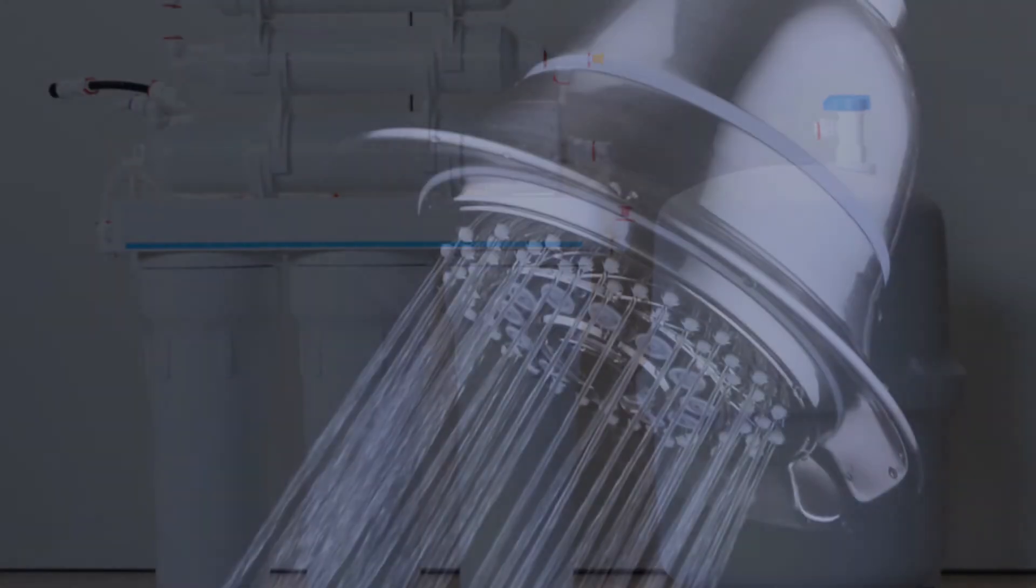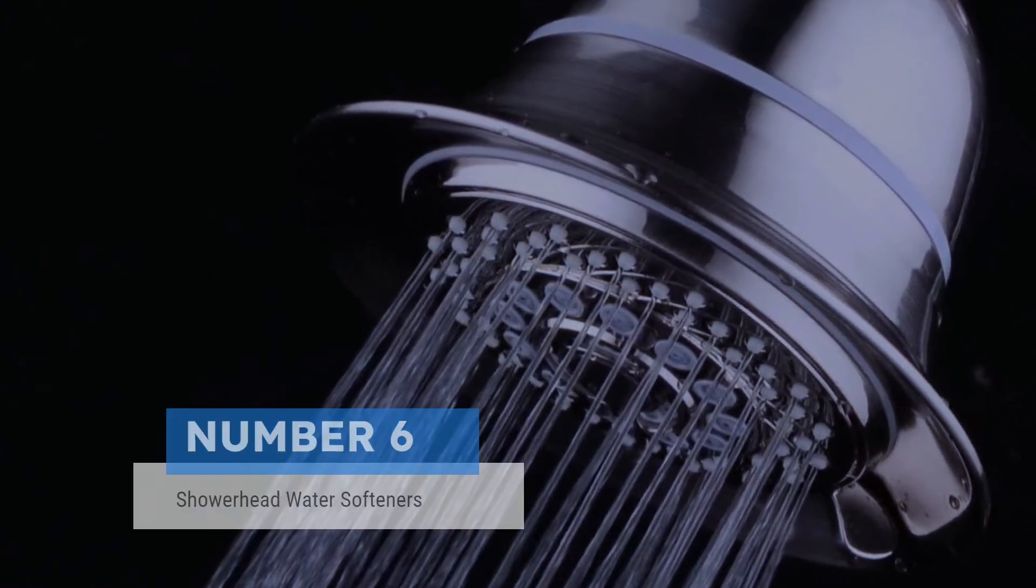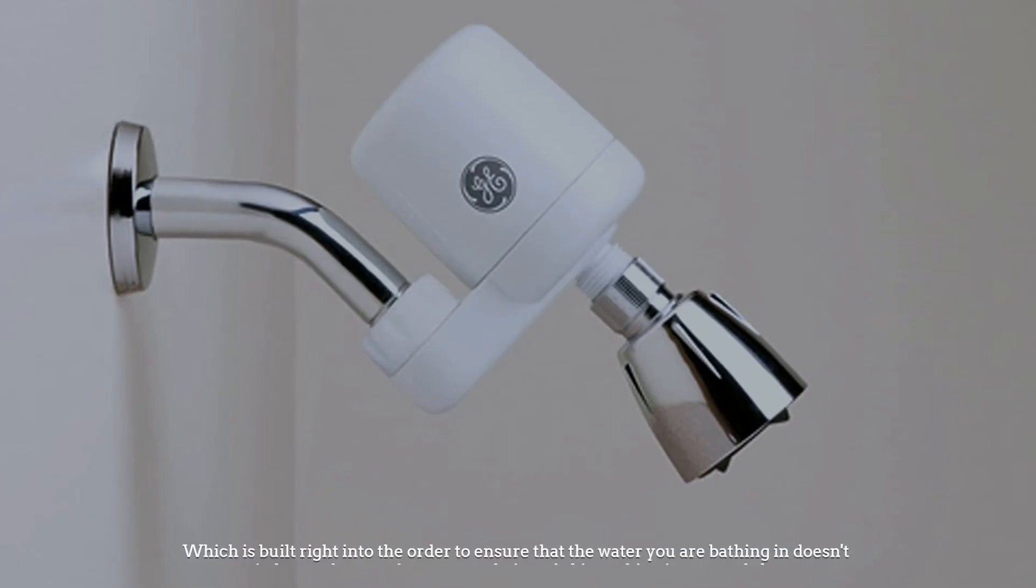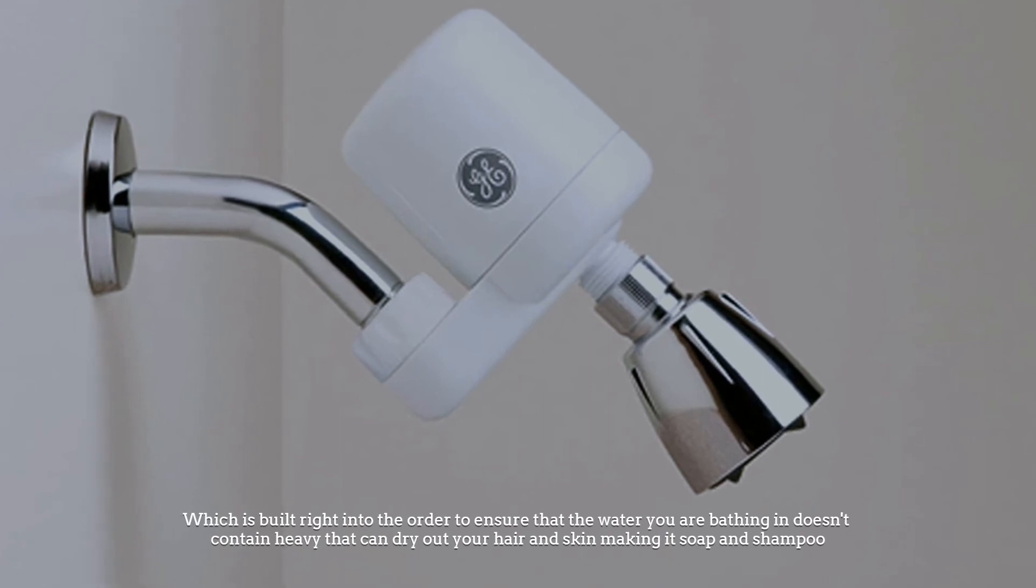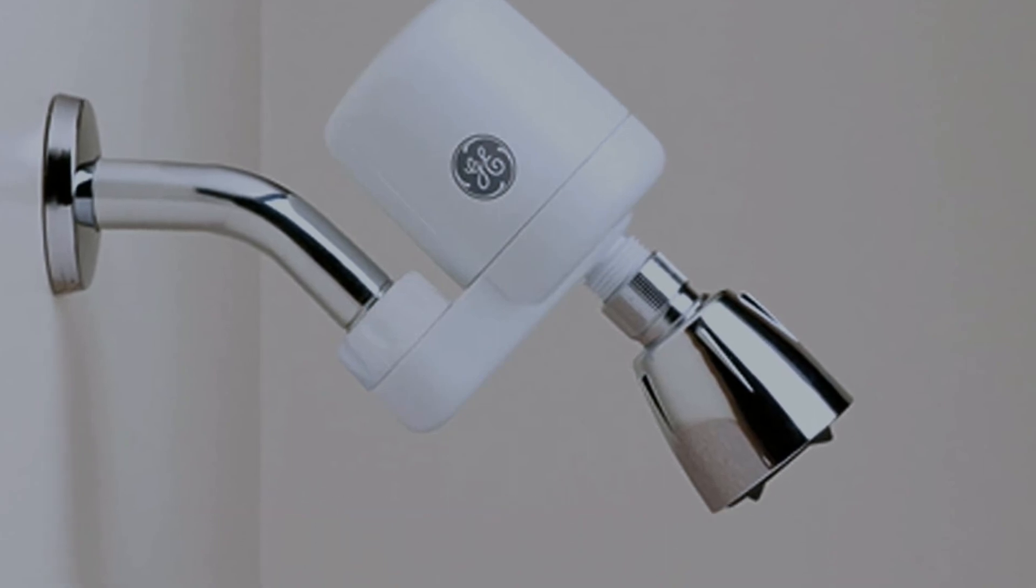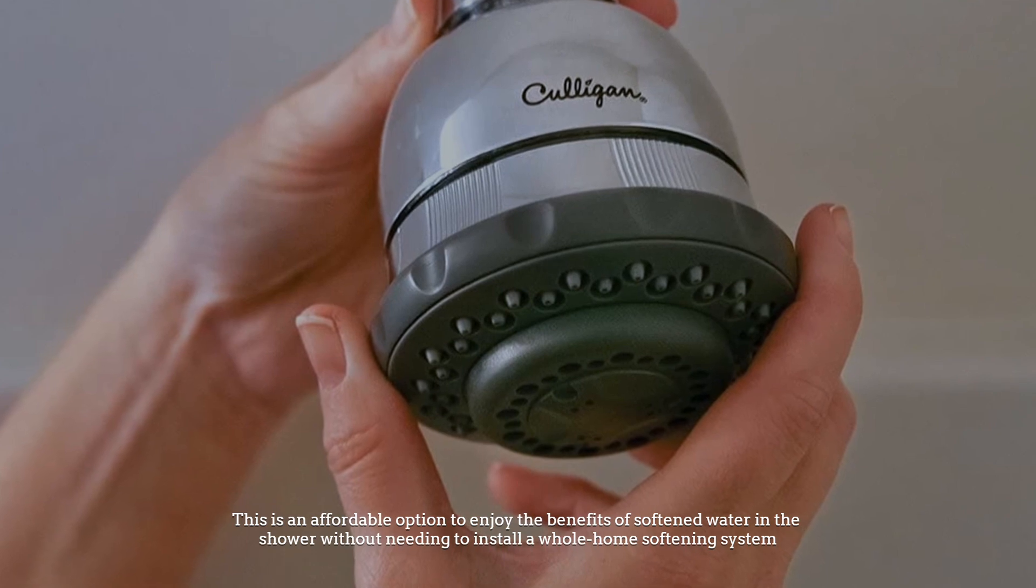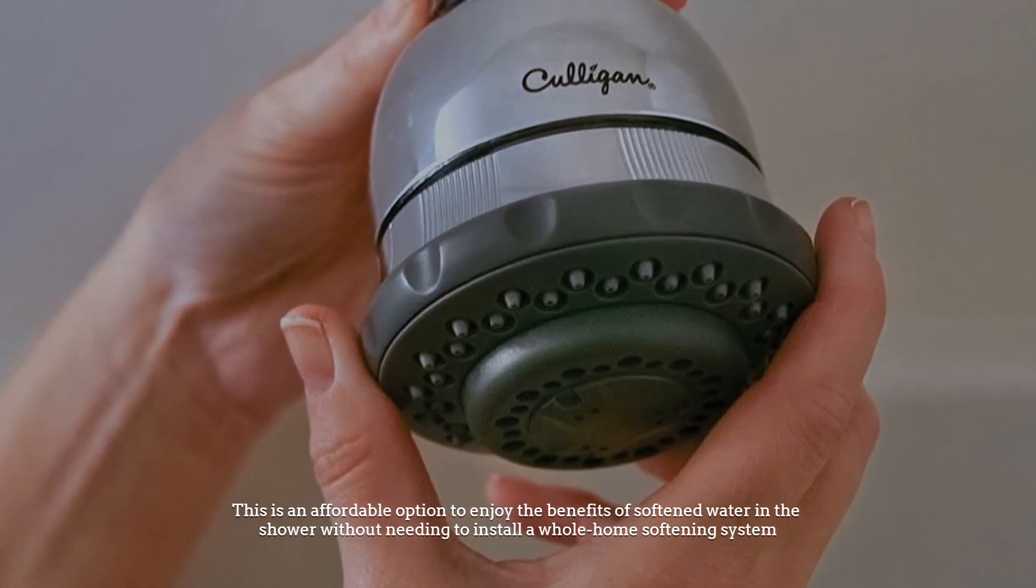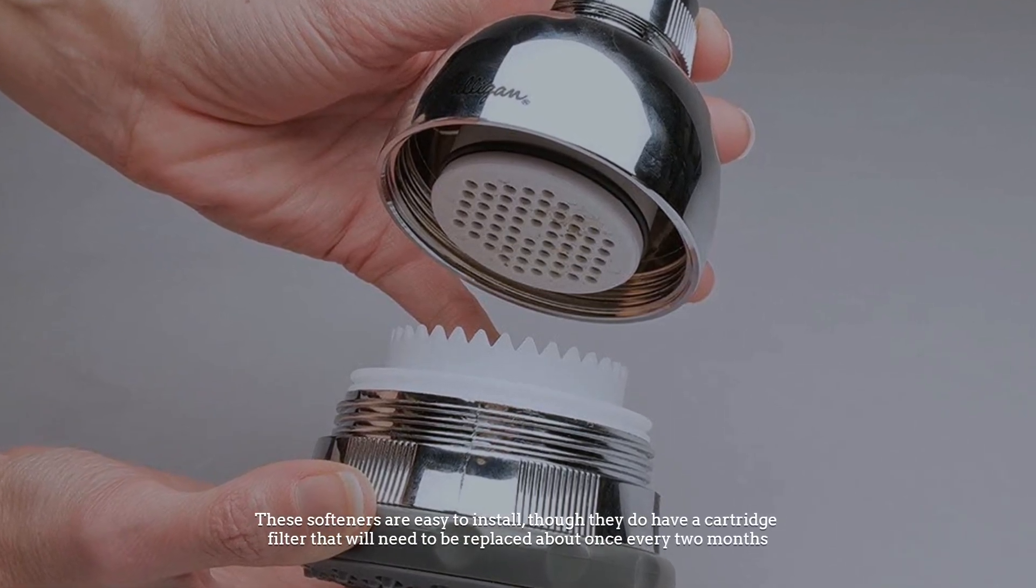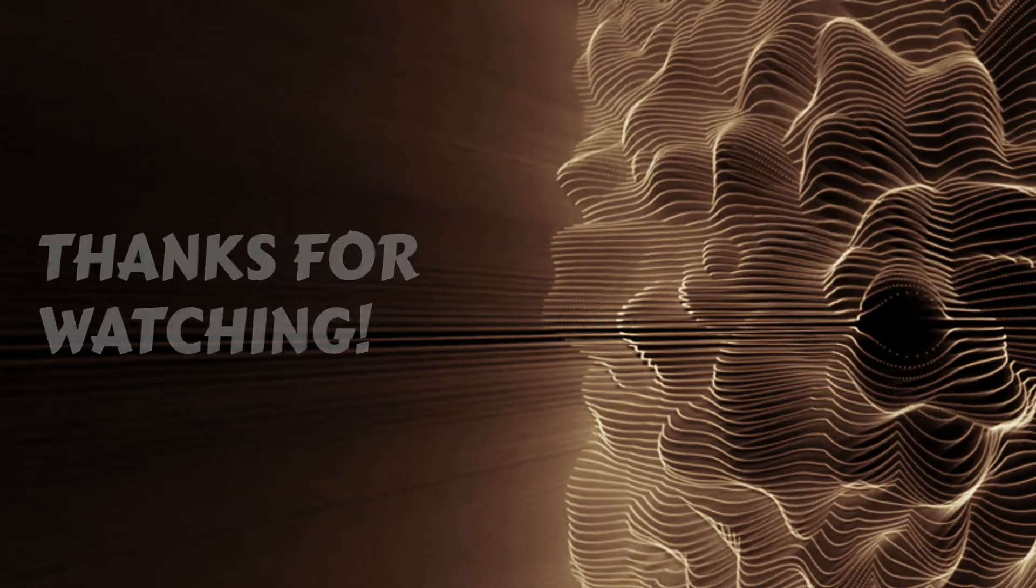Number six: shower head water softeners. Another point-of-use water softener type is the shower head water softener, which is built right into the shower head in order to ensure that the water you are bathing in doesn't contain heavy minerals that can dry out your hair and skin, making it difficult to rinse away soap and shampoo. This is an affordable option to enjoy the benefits of softened water in the shower without needing to install a whole-home water softening system. These softeners are easy to install, though they do have a cartridge filter that will need to be replaced about once every two months.